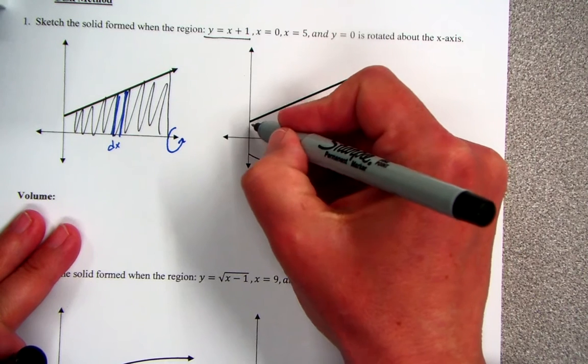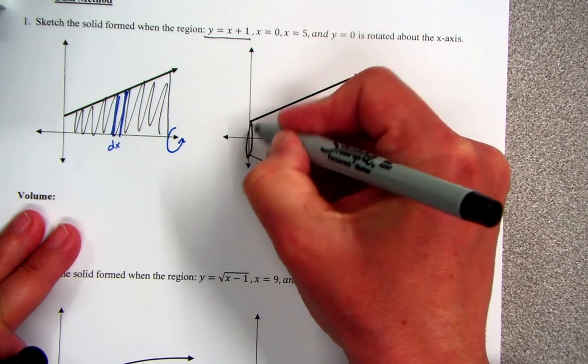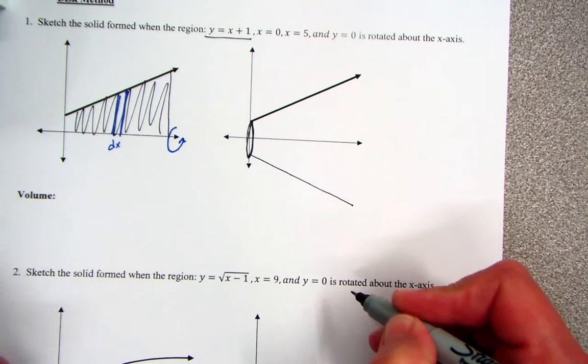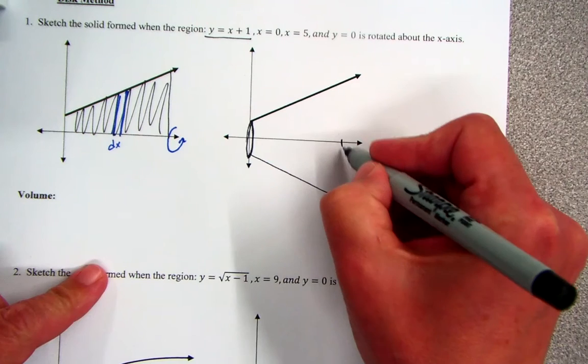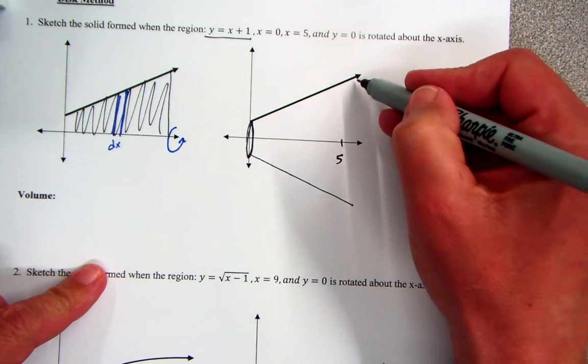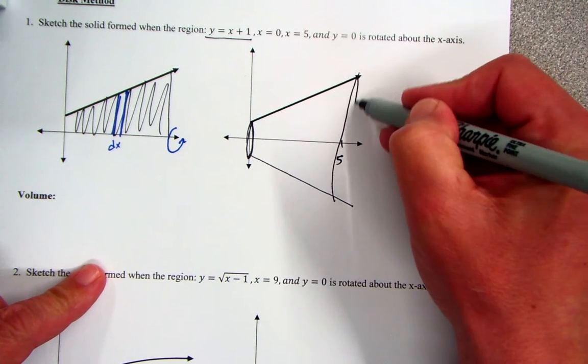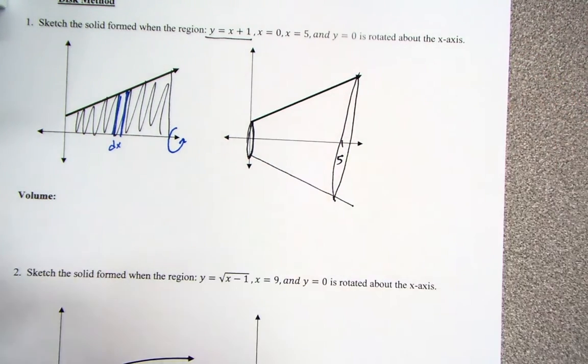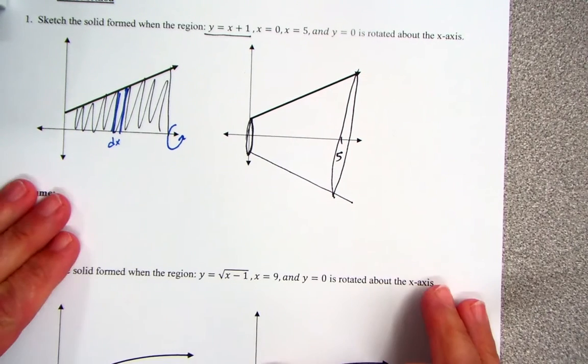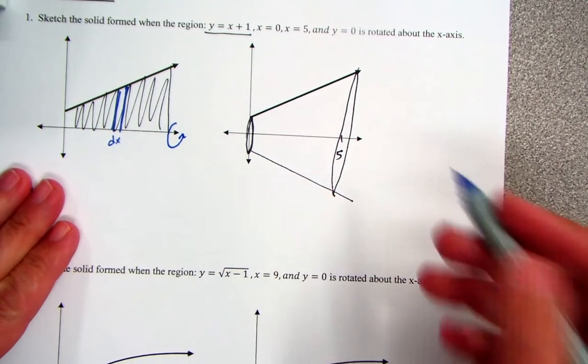And so essentially what you're going to get here is kind of this circular shape. And we're going to end it at 5. So the outside edge here is 5. So it's kind of this bigger cone without a top. So what we're going to do is, just like before, we're going to add up a whole bunch of different shapes.